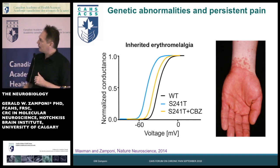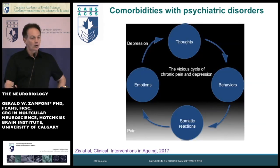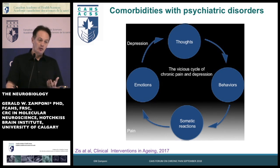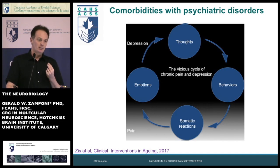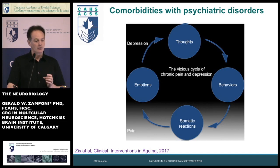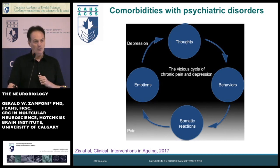There are comorbidities between pain and depression. When you have chronic pain, many patients become depressed, and that feeds back into increased pain. There is actually a biological reason for that. We have data in our lab that during visceral inflammation, there is immune cell infiltration into the brain. These immune cells change brain structures known to be responsible for depression, and then you become depressed. Understanding these processes is critical.